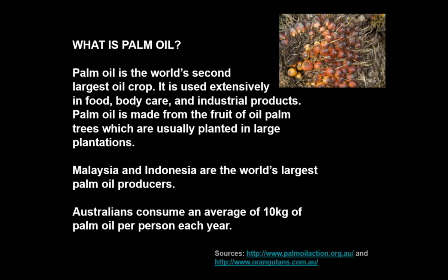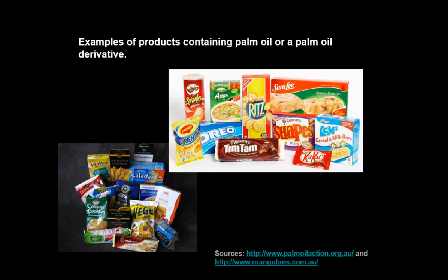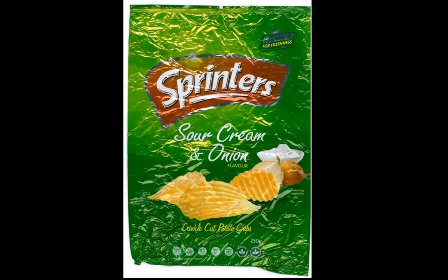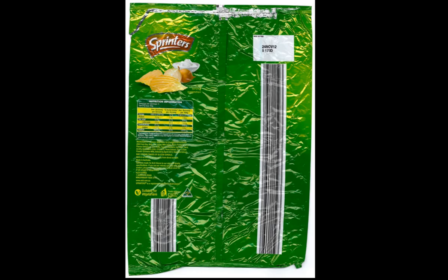Examples of products that contain palm oil or palm oil derivatives include chips and CC's and the like. Now if you look at a packet of chips — here I've got salt and vinegar — let's look at the CC's. On the back there's a list of ingredients.